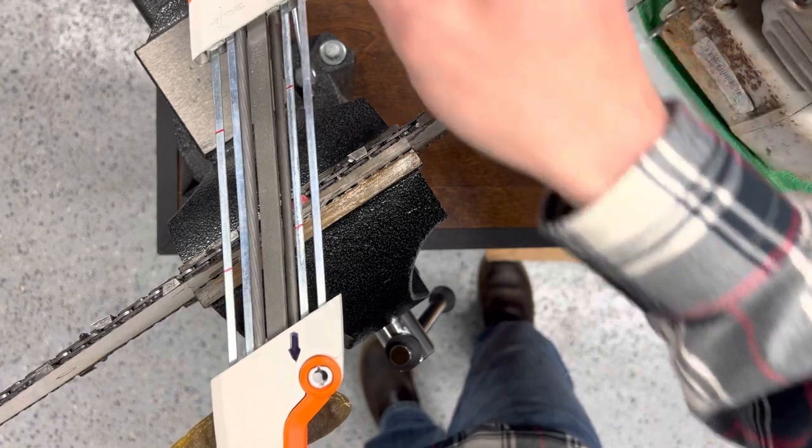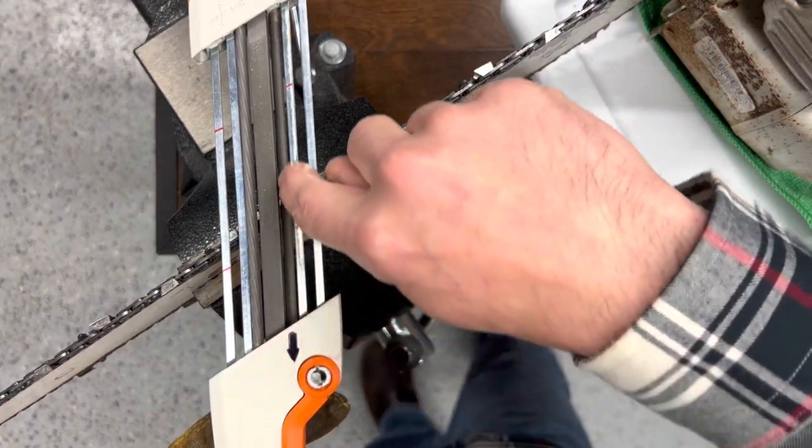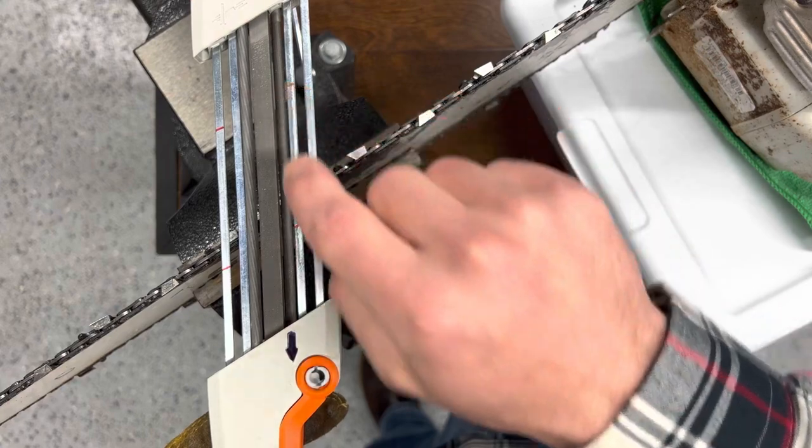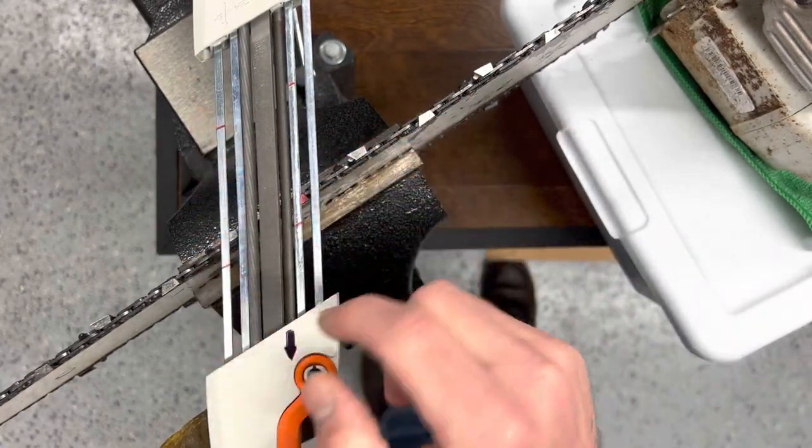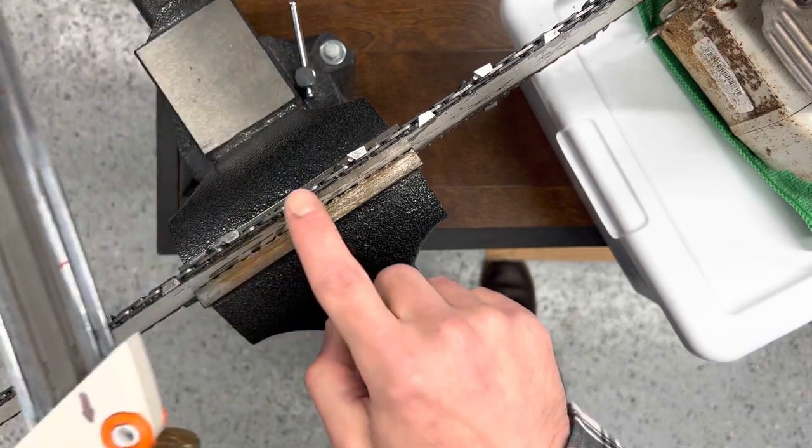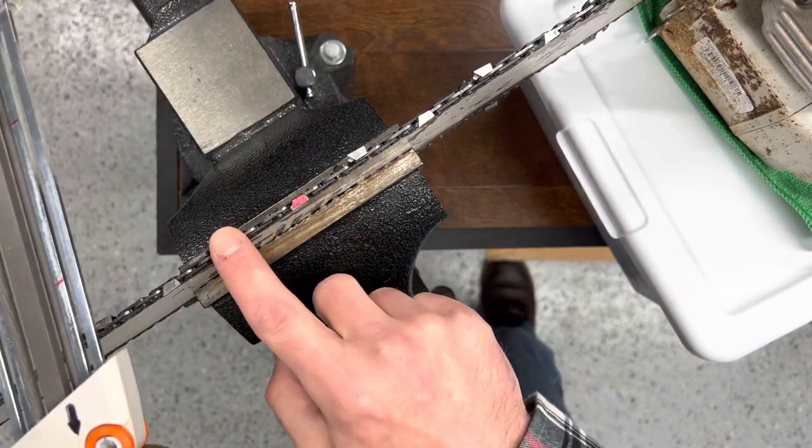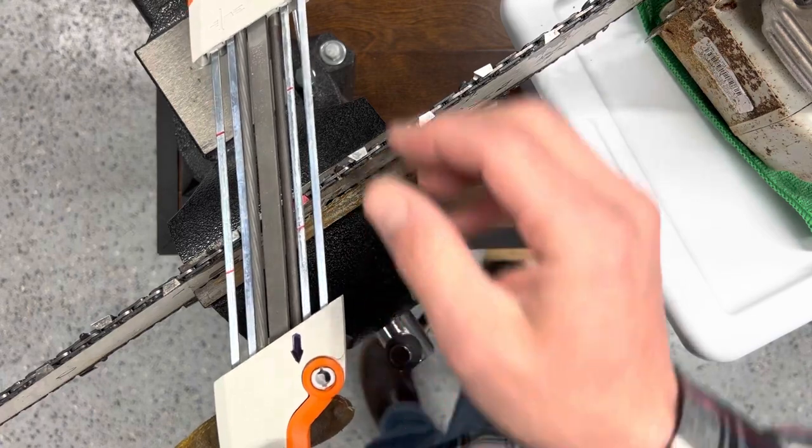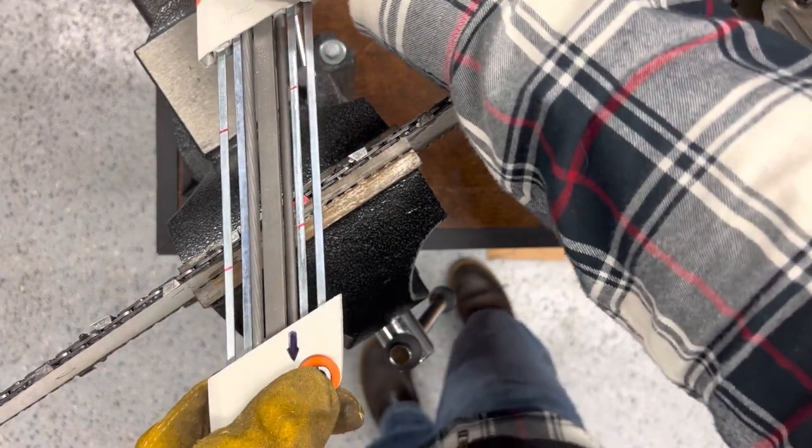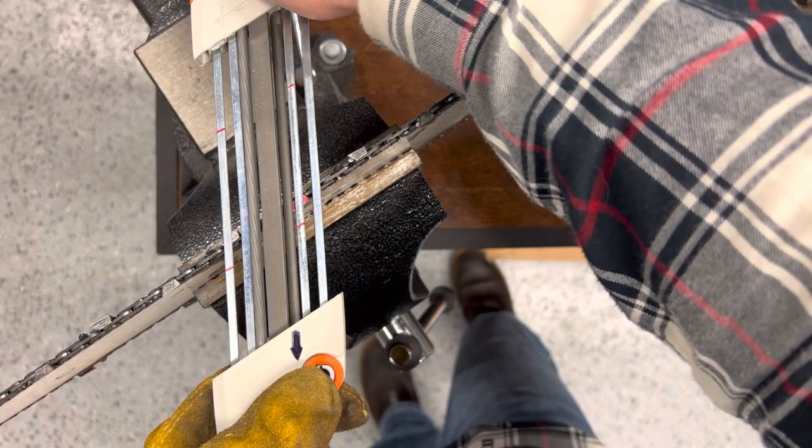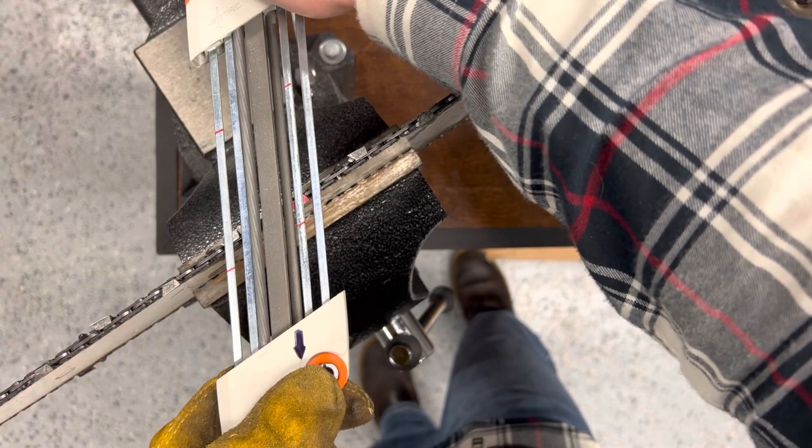Next thing that's really important is this guide right here, this metal guide with the two red marks on it, and this guide right here with the two metal red marks on it. Make sure these are sitting on the tooth you're sharpening and the one in front of it. That is the guide to hold it into place. And then all you got to do is just take some firm pressure and give it one or two strokes in the direction of the arrow.